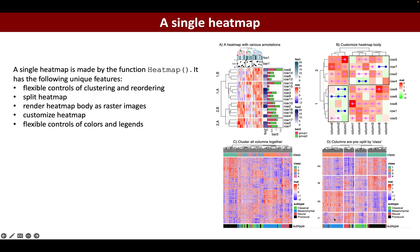A single heatmap made by the function Heatmap with H capitalized has unique features compared to other heatmap packages. It supports flexible controls of clustering and matrix reordering. You can integrate any type of clustering methods and use dendrogram objects in the heatmap function.